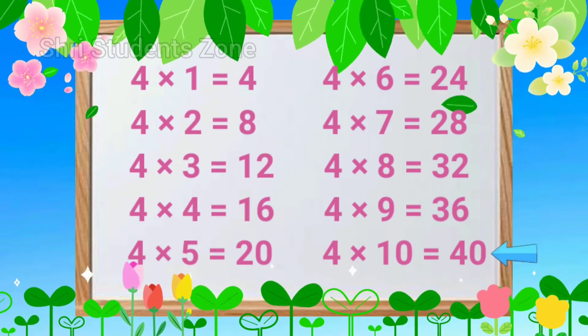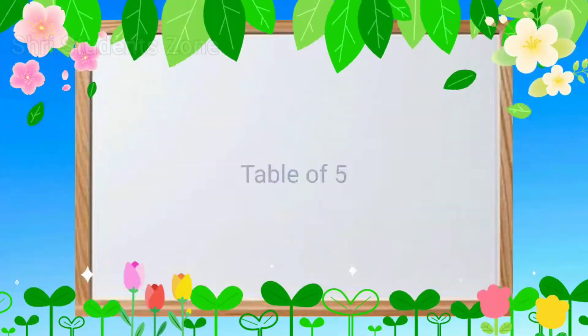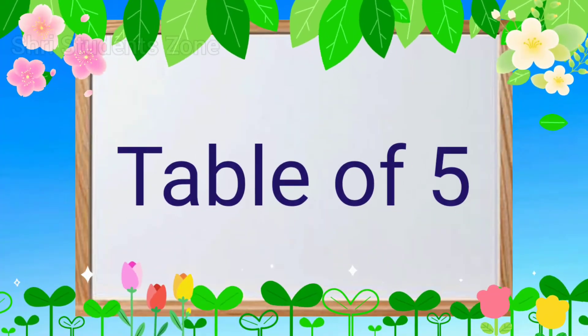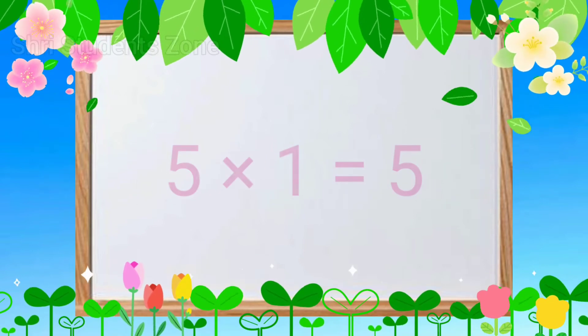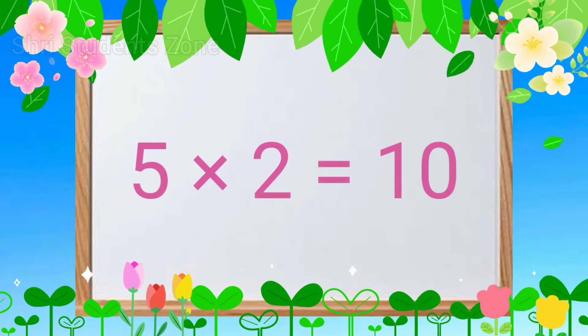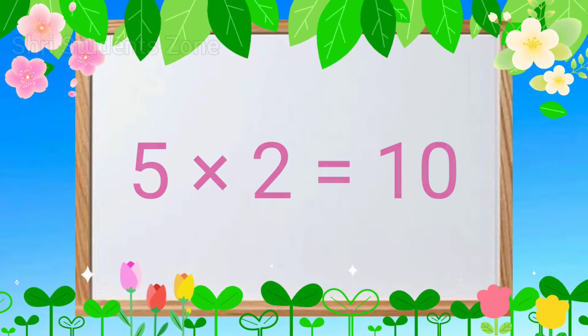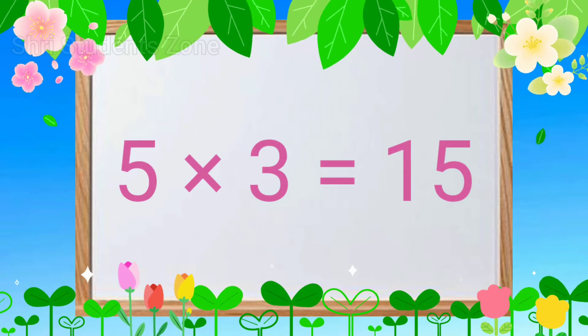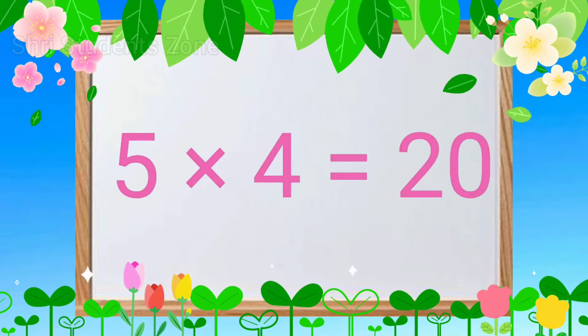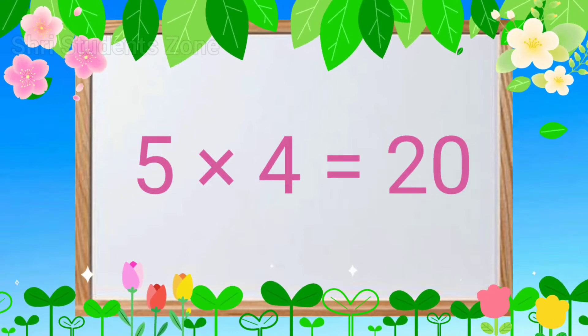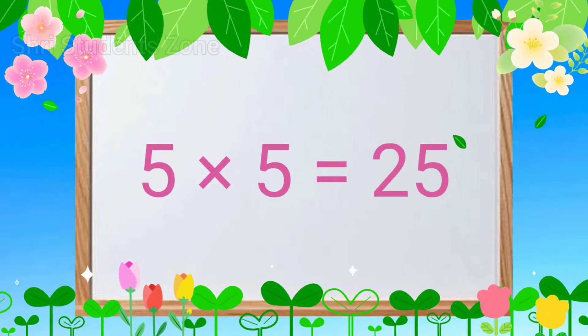Table of 5. 5-1s are 5, 5-2s are 10, 5-3s are 15, 5-4s are 20, 5-5s are 25.